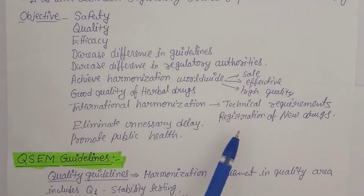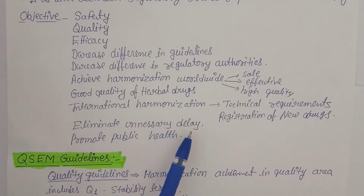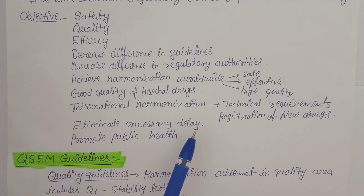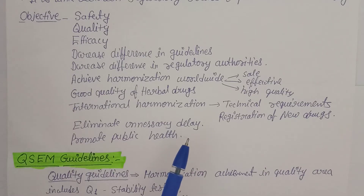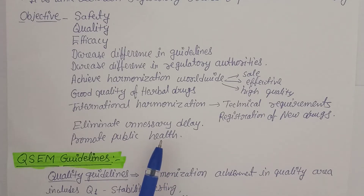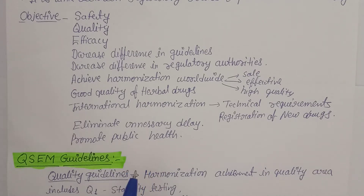Harmonization of technical requirements for registration of new drugs is a main objective. ICH also aims to eliminate unnecessary delays in the approval process — where submissions can get stuck due to incomplete clinical or pre-clinical trial requirements. Clear, well-framed rules speed up the approval process. Ultimately, the goal is to promote public health worldwide, not just for one state or country.